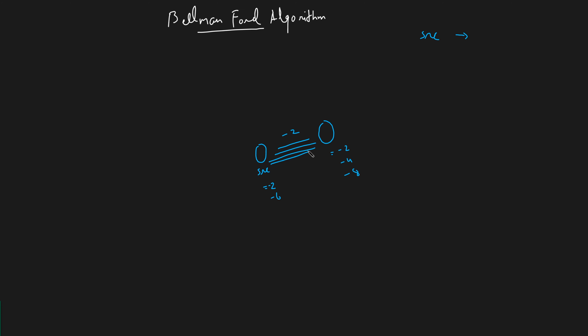Dijkstra's algorithm will not be able to find the shortest path if your graph contains negative edges — that is where Dijkstra fails. Bellman-Ford will work for negative edges, but there are certain conditions.